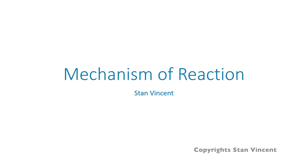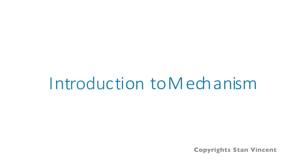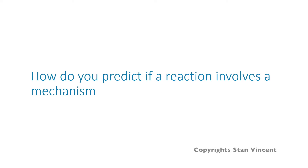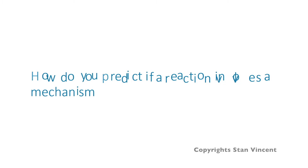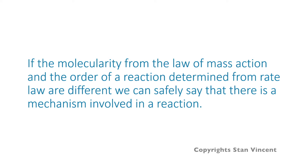In this video, we will be talking briefly about mechanisms of reactions. Here is a very short introduction into the very elementary ideas for writing mechanisms of a reaction. The first question is: how do you predict if a reaction involves a mechanism? In order to answer this question, we will need to know about the law of mass action and rate law. If the molecularity of the law of mass action and the order of a reaction determined from the rate law are different, we can safely say that there is a mechanism involved in the reaction.